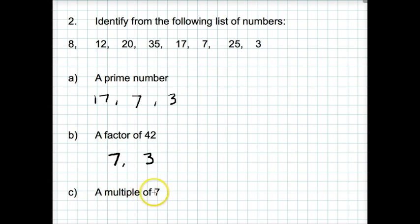And the last one, a multiple of 7. We're looking for numbers in the 7 times table. It can't be 8, it's not 12, it's not 20. So you could say 35 is in the 7 times table. And you could actually say 7 is in the 7 times table as well.